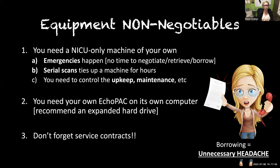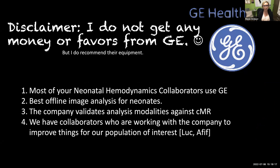The other non-negotiable, especially if you want to do research, is that you need your own echo pack with its own computer. This is not that expensive, and it should be the newest version, living on a computer ideally with an expanded hard drive. Don't forget service contracts when negotiating equipment — they're part of the package. Every five years they upgrade something; every year they come and clean things. It's something people forget to negotiate in the original contract.